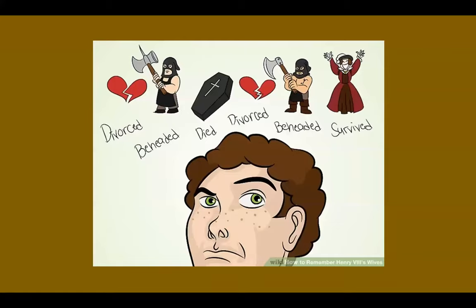One way to remember King Henry VIII's six marriages is the following mnemonic: Divorced, beheaded, died — divorced, beheaded, survived. So Catherine of Aragon was divorced, Anne Boleyn was beheaded, Jane Seymour died, Anne of Cleves was divorced, Catherine Howard was beheaded, and Catherine Parr survived. This is one way that you can remember King Henry VIII's six wives.